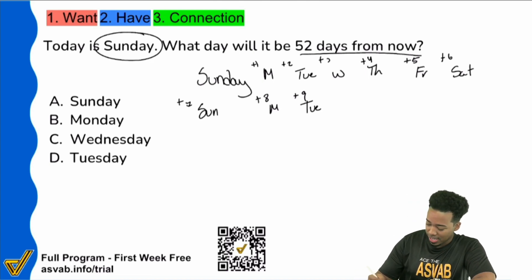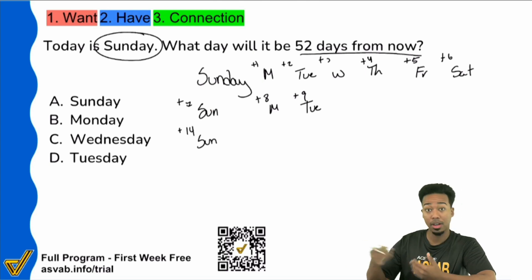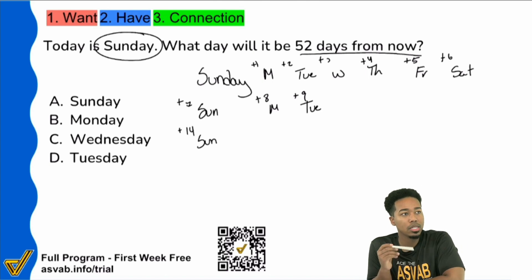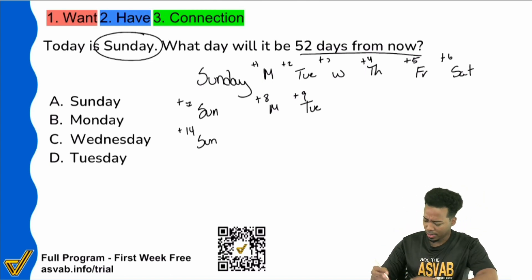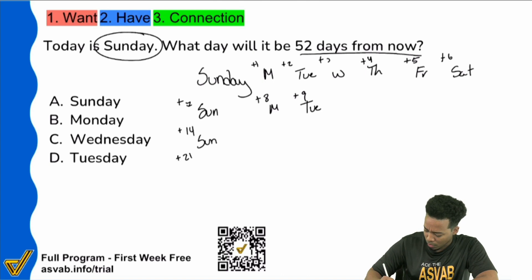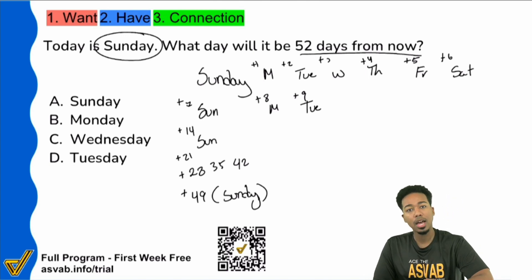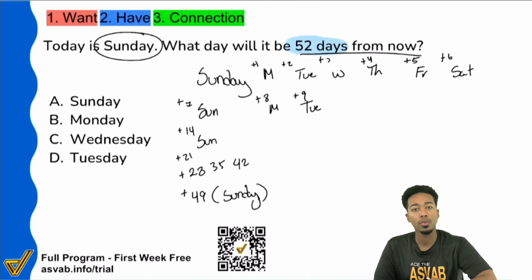Every seven days is going to be Sunday. So think about it: if I add 14 days — that's seven and seven again — that'll be another Sunday. Add another seven, 21 days, that's another Sunday. So we're basically just counting up really quickly, skipping all the extra steps. Day 14 is Sunday, day 21 is Sunday, day 28 is Sunday, day 35 is Sunday, day 42 is Sunday, and day 49 is Sunday as well. Now we're only three days away from 52.